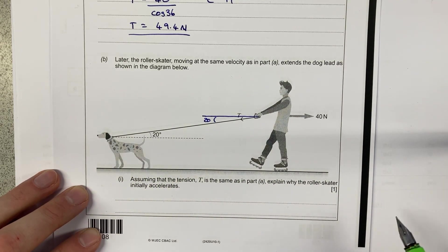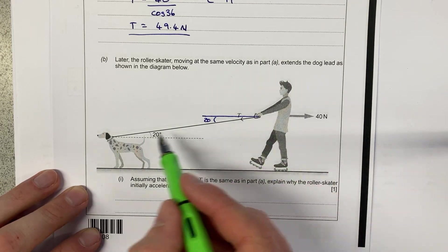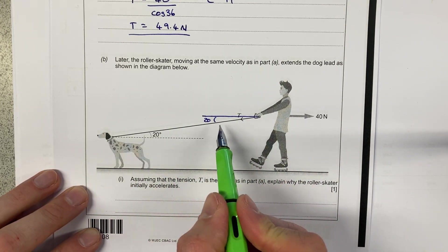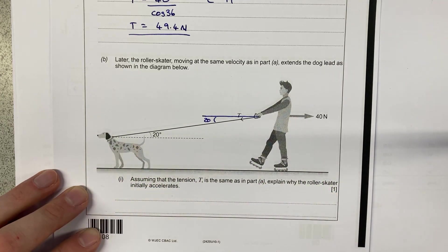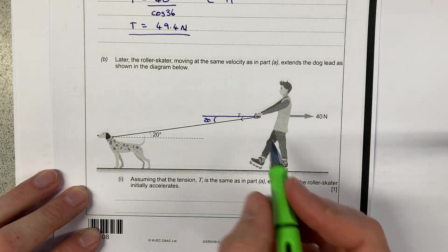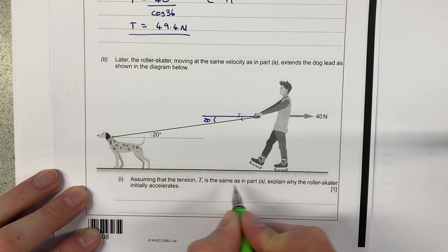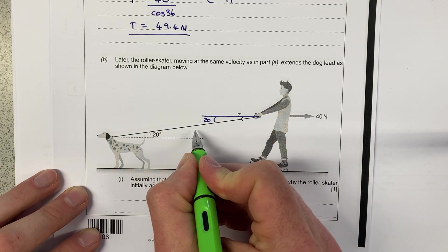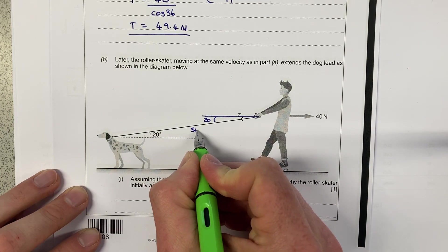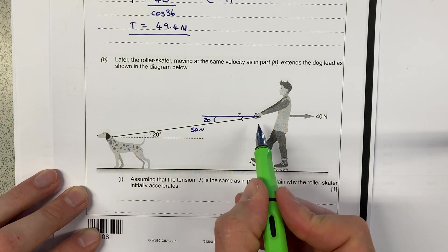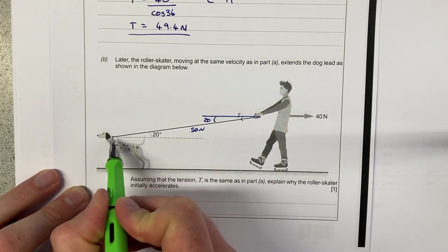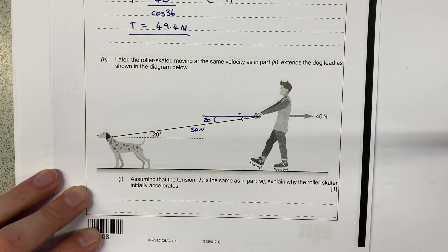a greater proportion of the work done on the human being, a greater proportion of that tension force, is going to act on the person. So it will become larger. So what would we say? Let's have a quick look. Assuming the tension T is the same, so this value here remains at 50 newtons. This value remains at 50 newtons. You can see already that that horizontal component must be larger.